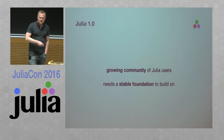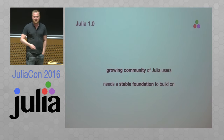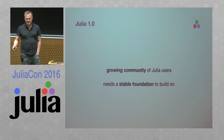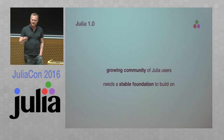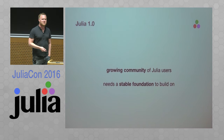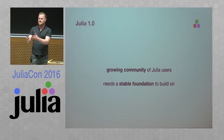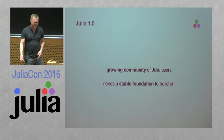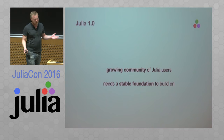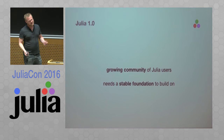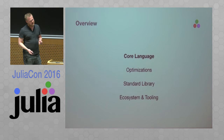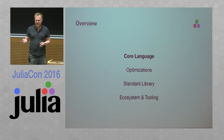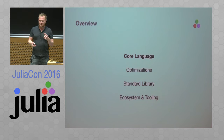At the same time we're counter-balancing that with not wanting to bake in a lot of mistakes. We need to get to 1.0, but just fast enough — not too fast and not too slow. This talk covers four areas: core language, optimizations, standard library, and ecosystem and tooling.